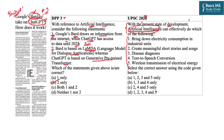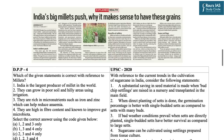Coming to the answer to the previous year question on artificial intelligence — many of you might have guessed it. UPSC in its official answer key has given option B: 1, 3, and 4 as the correct answer, and not 2 or 5. Moving towards question number four for today's DPP, which is in relation to millets.